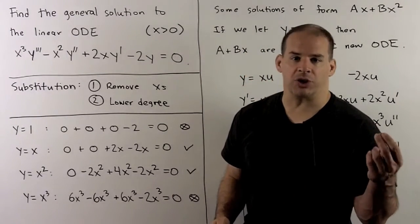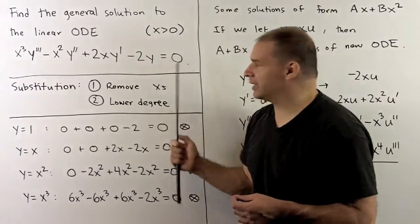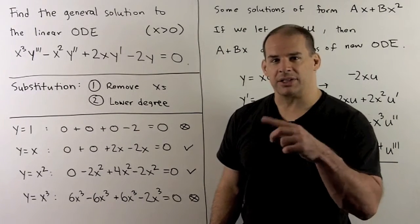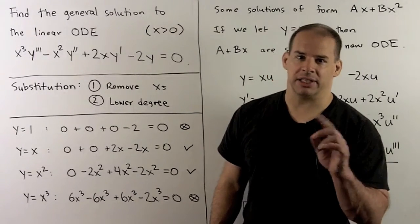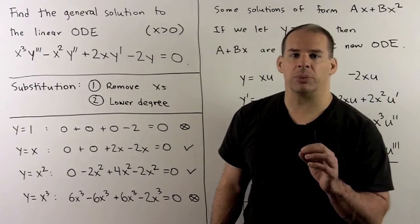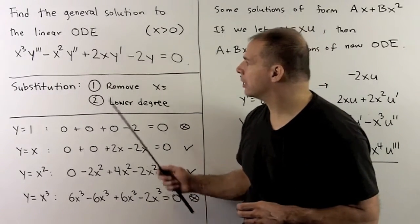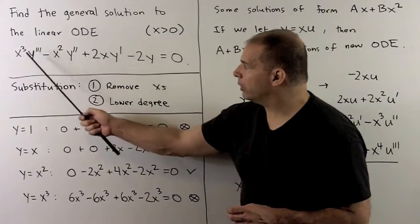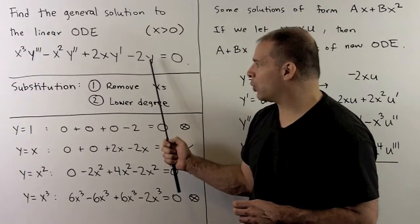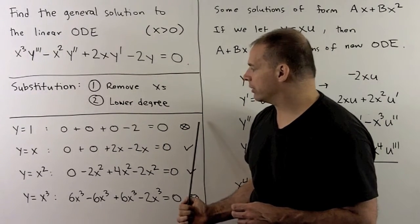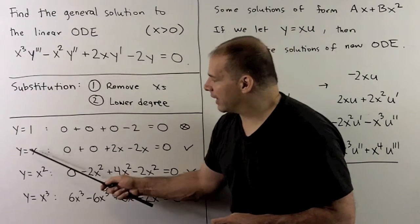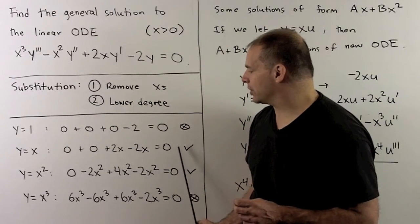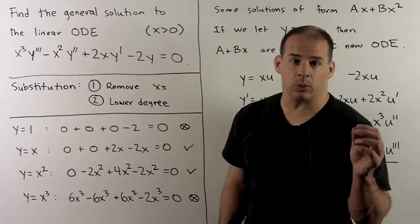Whenever I have a strange equation, I like to play around with it a little bit to get an idea of whether there are obvious solutions, or to guess some solutions based on the behavior. Here I'm going to put in powers of X and see what happens. If I let Y equal 1, the derivatives all go away, leaving minus 2 times 1 equal to 0 — that's not a solution. If I let Y equal X, we lose the first two derivatives, giving 2X minus 2X equals 0. So Y equals X is a solution.